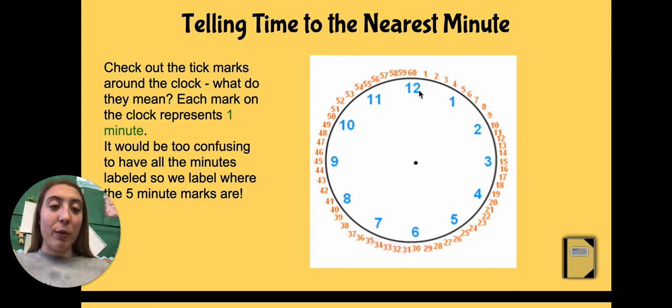So from our 12 to our 1, that's five minutes. And remember, we can skip count by five: 10, 15, 20, 25, 30, 35, 40, 45, 50, 55, 60. But when it's on the 12, that is when we have our o'clock.